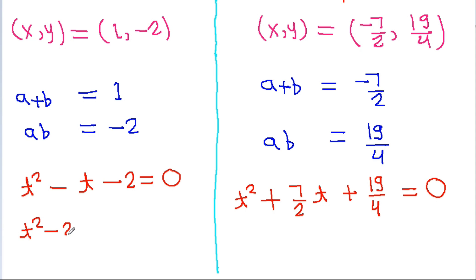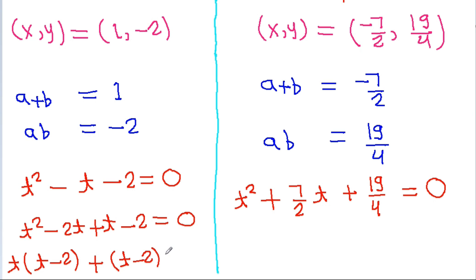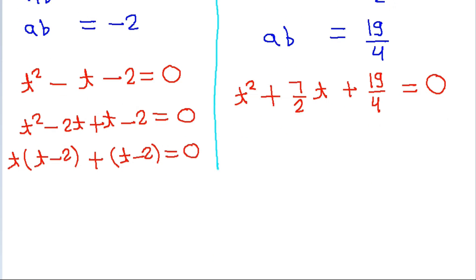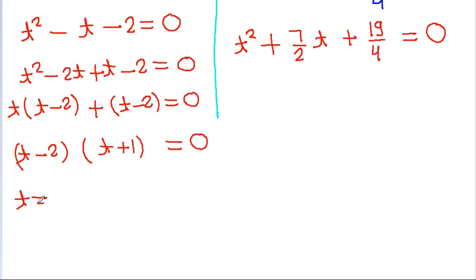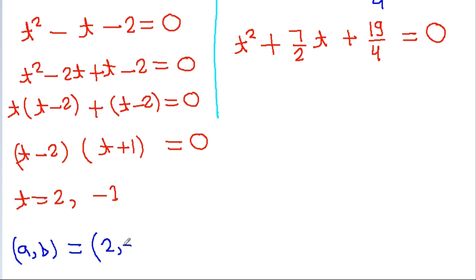The quadratic equation having roots a and b for the first case is t² − (sum of roots)t + (product of roots) = 0, giving t² − t − 2 = 0. Factoring: (t − 2)(t + 1) = 0, so a = 2 and b = −1, or a = −1 and b = 2.